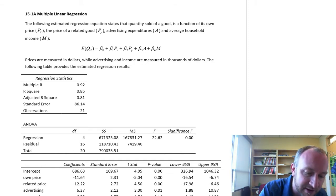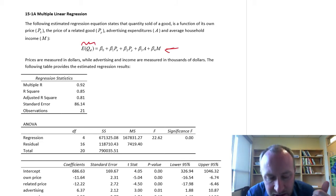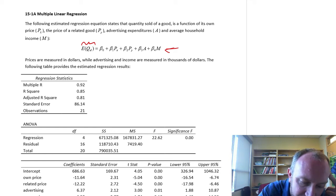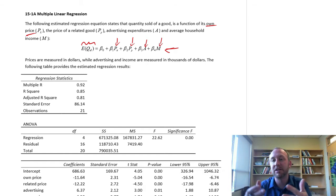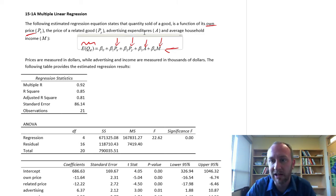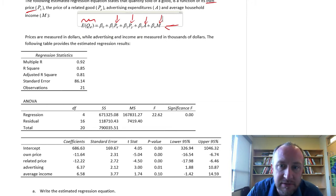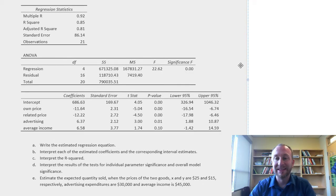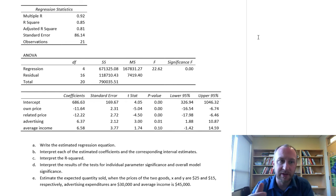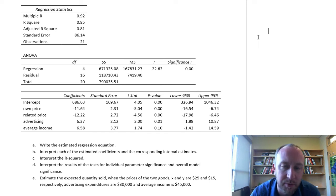We start off with what looks like a demand curve. The expected quantity demanded is a function of own price (Px), the price of a related good, advertising expenditures, and income. So we have our regression equation, and the results from that estimation are shown here. We'll go through this output and deal with a few different issues — how to extract information from this output.